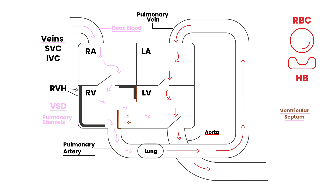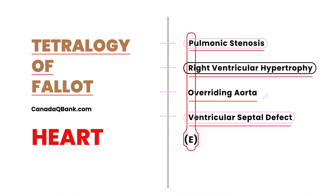The last component is the overriding aorta. Blood is now going from the right ventricle into the aorta — in addition to blood from the left ventricle. The pink represents deoxygenated blood and red represents oxygenated blood. The aorta is now receiving blood from both the right and left ventricles. That's where the term overriding aorta comes from.